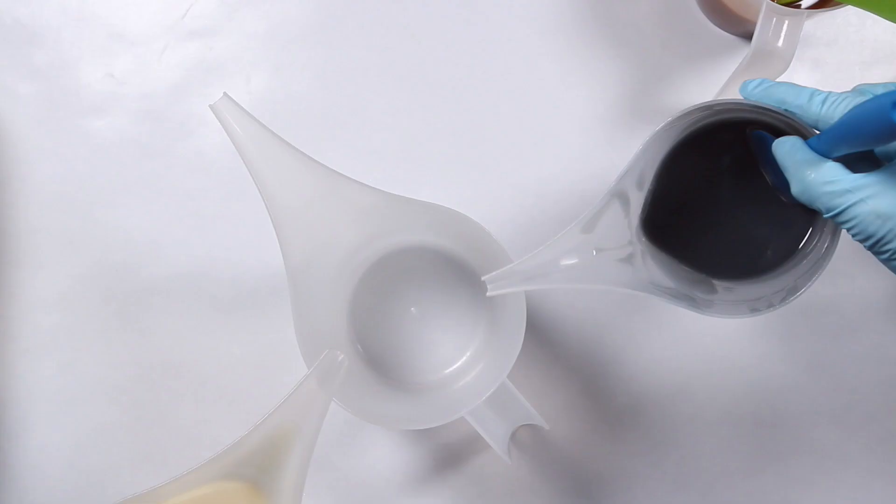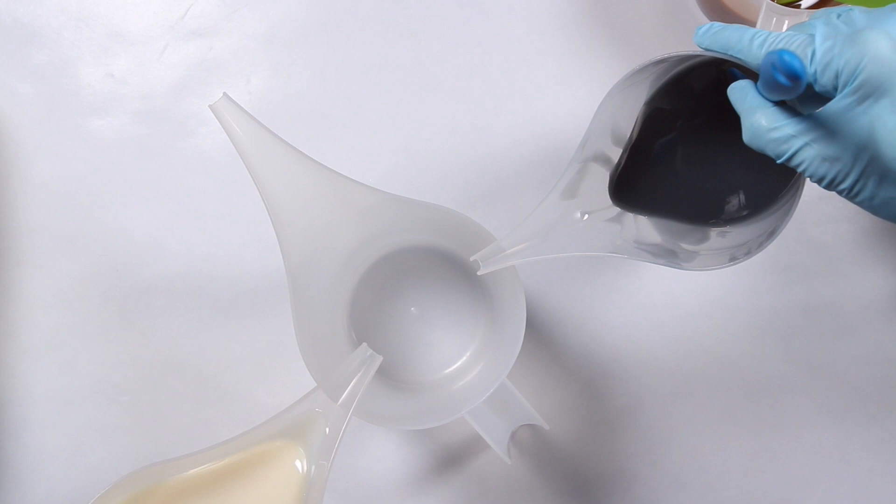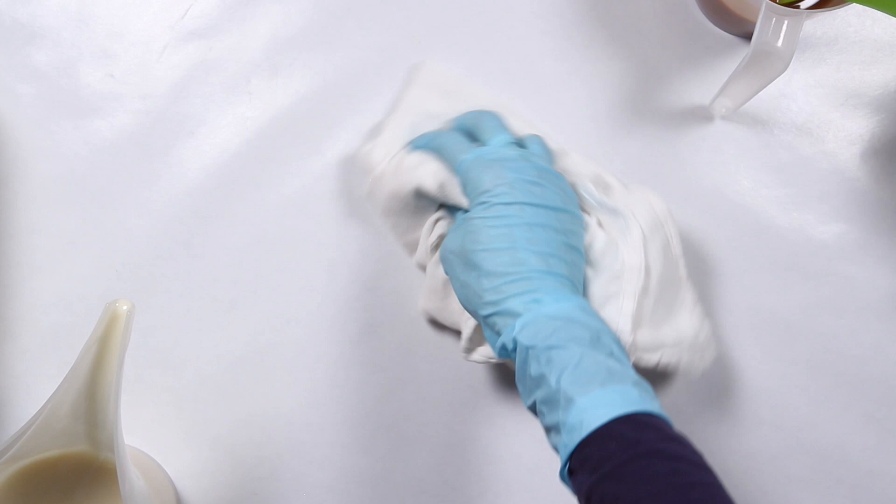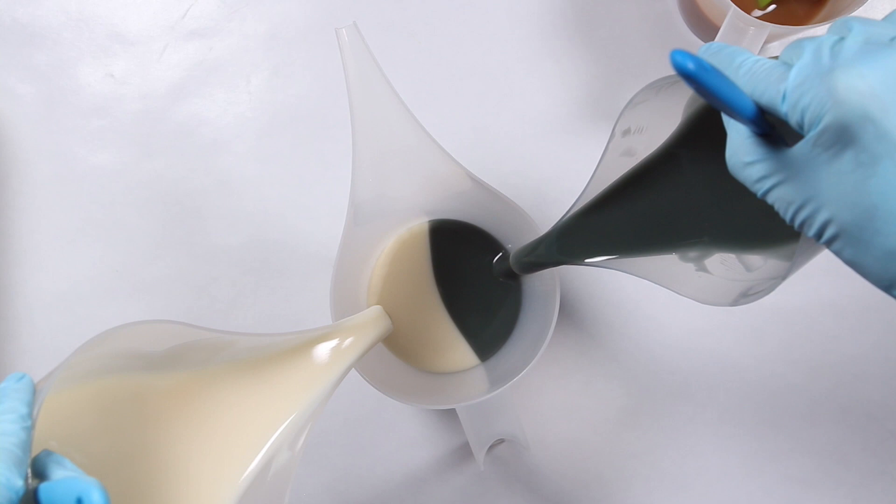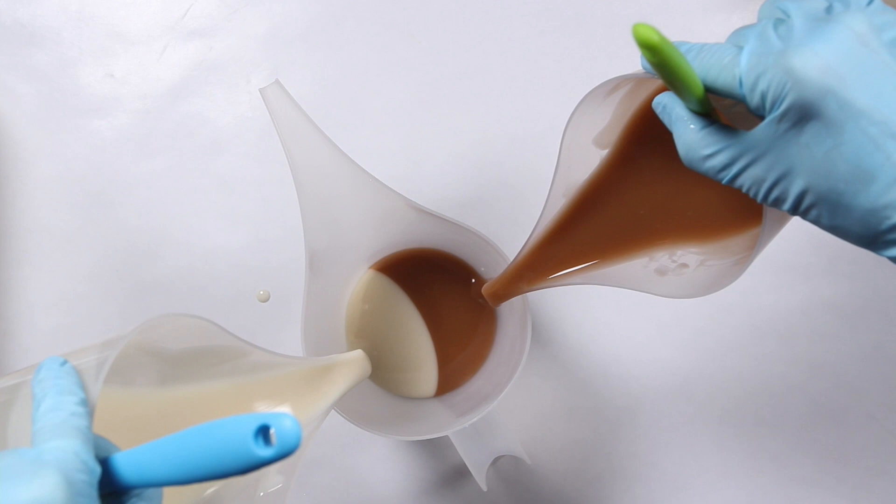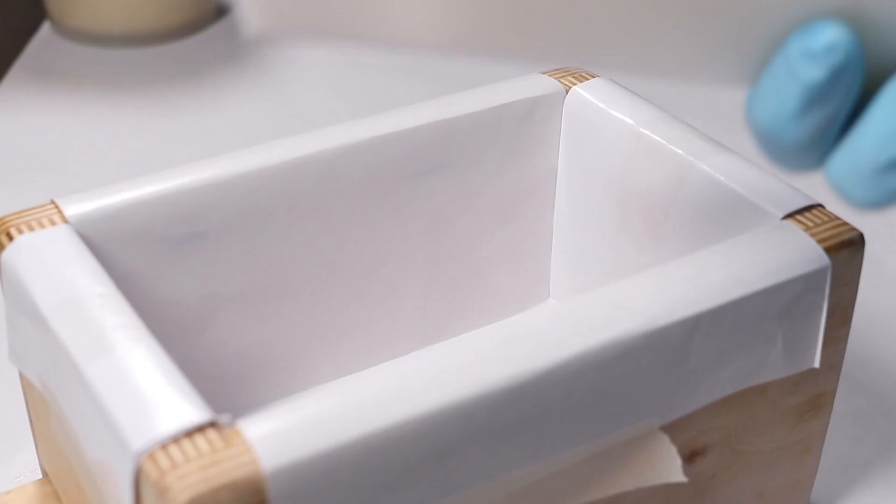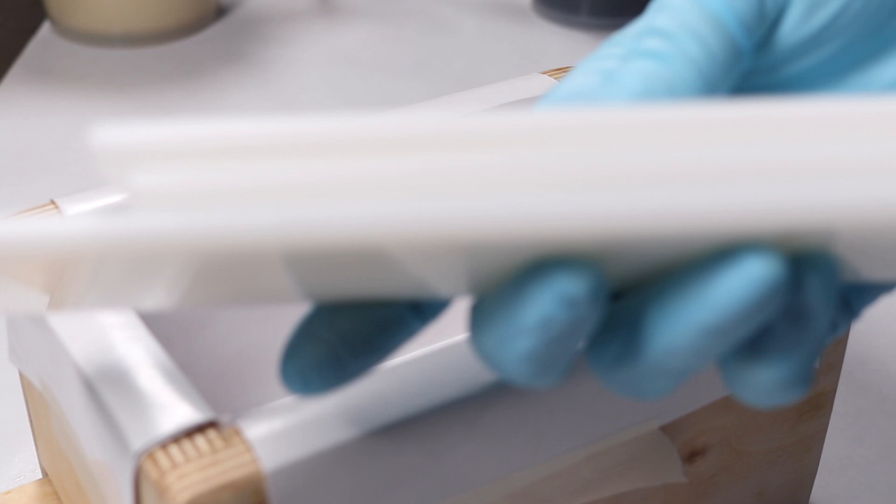I poured each color into a separate container along with the white, attempting to keep the amounts even. I elevated the back of the mold about an inch using some thick acrylic pieces from one of my slab mold dividers.